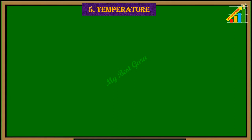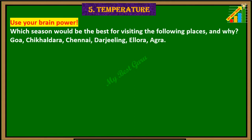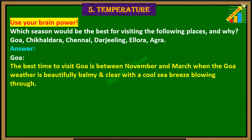Use your brain power. Which season would be the best for visiting the following places and why? Goa, Chikaldara, Chennai, Darjeeling, Elora, Agra. Answer: Goa — The best time to visit Goa is between November and March, when the Goa weather is beautifully balmy and clear with a cool sea breeze blowing through. Chikaldara — July to September is the best time to visit Chikaldara; during March to mid-June the climate is warm during the day and cool in the evenings.